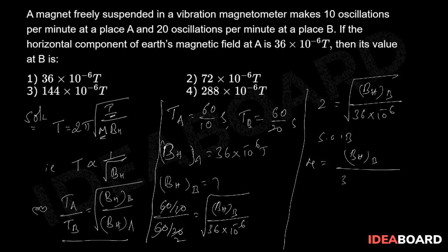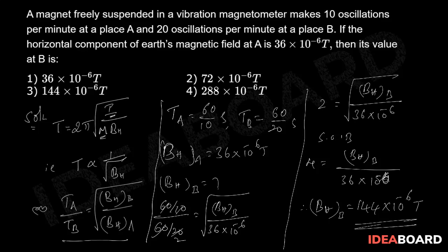Dividing gives 2 squared = BHB / (36×10⁻⁶), therefore the value of BH at B is 4 × 36×10⁻⁶ = 144×10⁻⁶ tesla. The correct option is the third one.